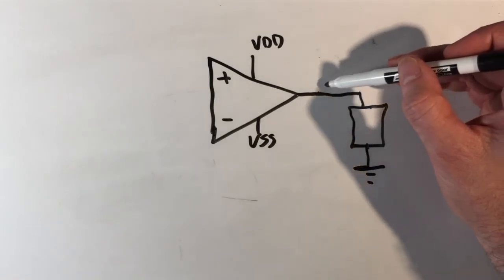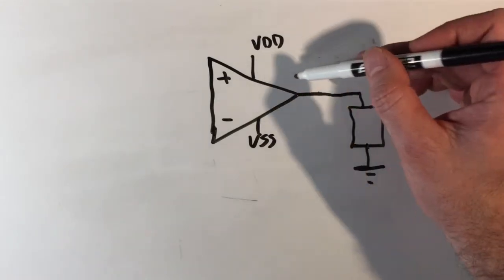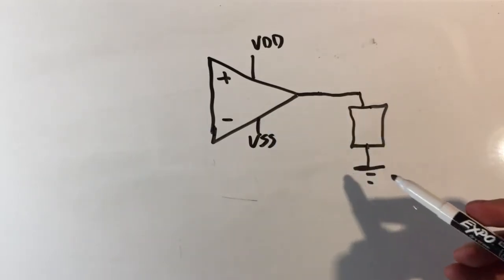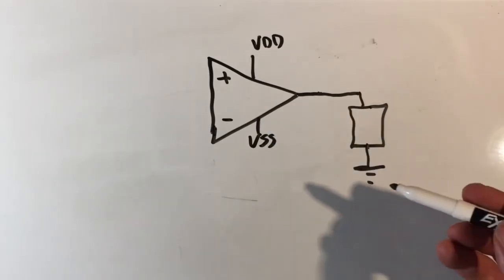Power oftentimes flows out of the load. Sometimes it could flow into the load. That really depends on what's going on in your circuit. So how do you set the gain on something like this?